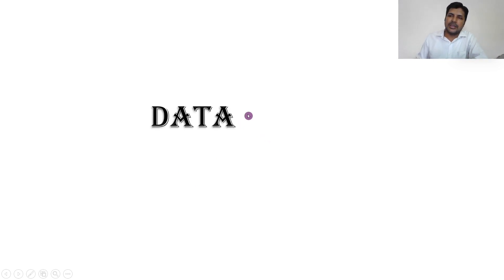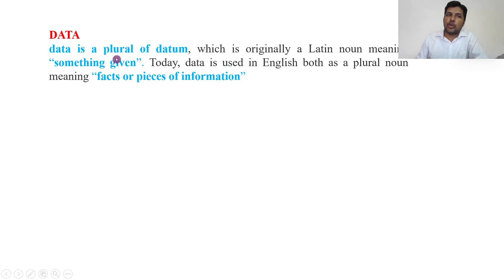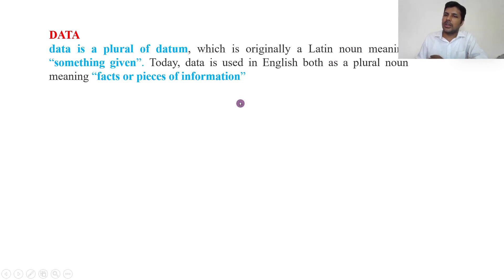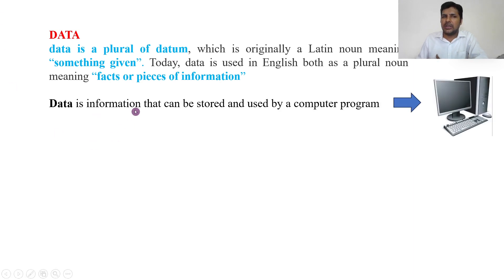Let us start with data. Data is the plural of datum, which is originally a Latin noun meaning 'something given.' Datum is singular and data is plural — they are Latin terms. Nowadays in English, data is used for both singular and plural.